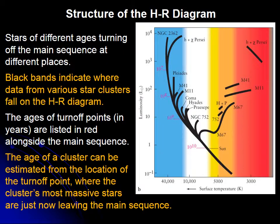This diagram shows many clusters. To understand it, take the youngest one — the New General Catalog 2362. This one has stars going all the way from top to bottom of the main sequence, so it is young, because the big stars are still there and have not moved into the red giant region.